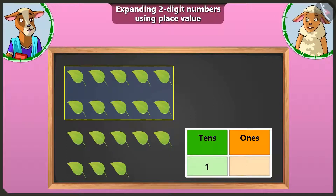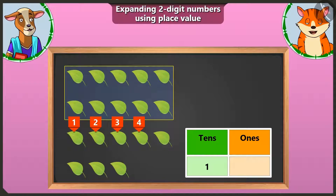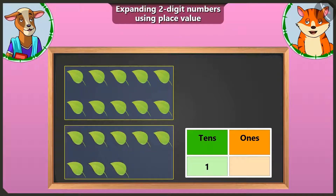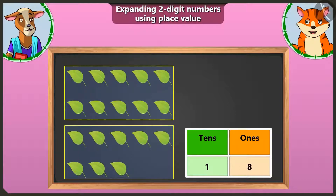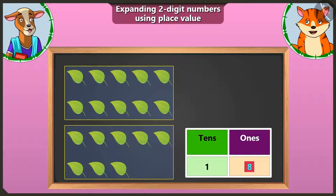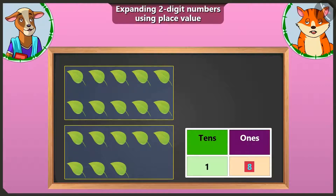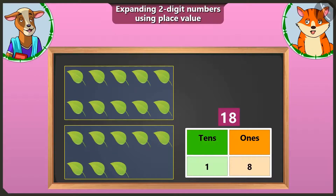Well done, Lily. Now I will count the remaining leaves. One, two, three, four, five, six, seven and eight. We will write the number eight in the ones box. One tens and eight ones make number eighteen. Well done, Billy.